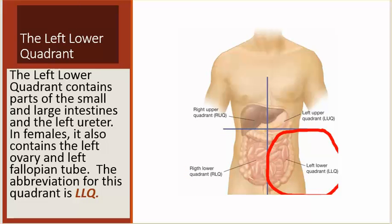The left lower quadrant contains part of the small and large intestines and the left ureter. In females, it also contains the left ovary and left fallopian tube. The abbreviation for this quadrant is LLQ.